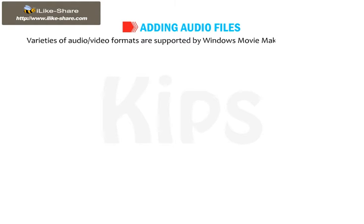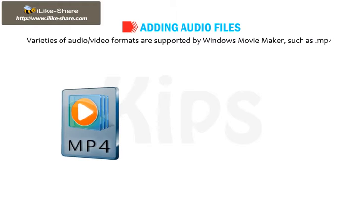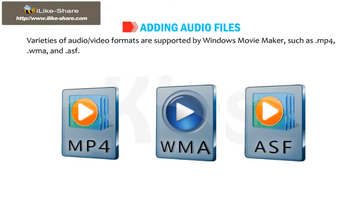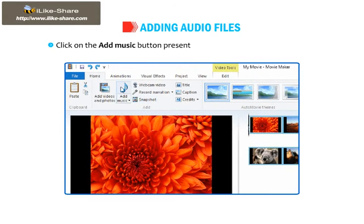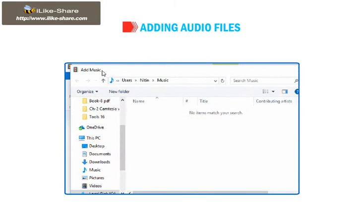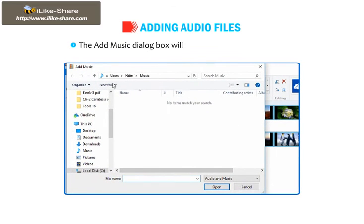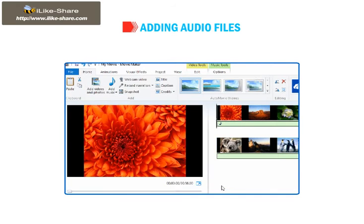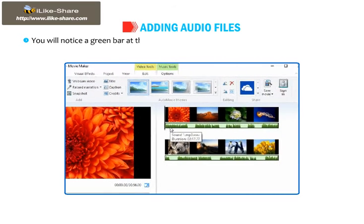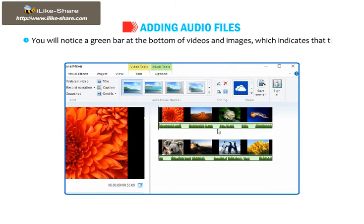Varieties of audio and video formats are supported by Windows Movie Maker, such as .mp4, .wma and .asf. To add an audio file, follow the given steps. Click on the Add Music button present on the Home tab in the Add group. The Add Music dialog box will appear. Select the file which you want to import and click on the Open button. You will notice a green bar at the bottom of Videos and Images, which indicates that the audio file has been imported.